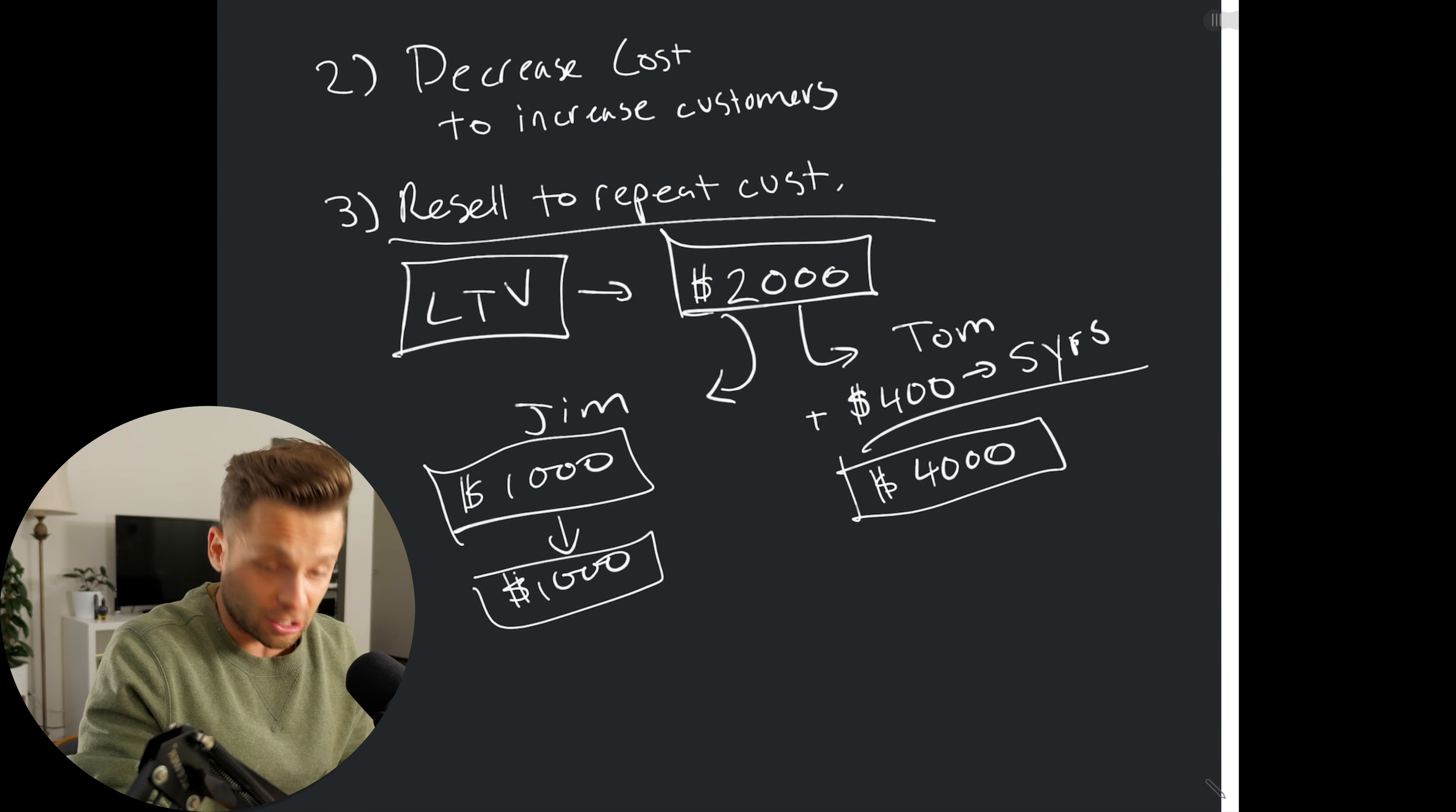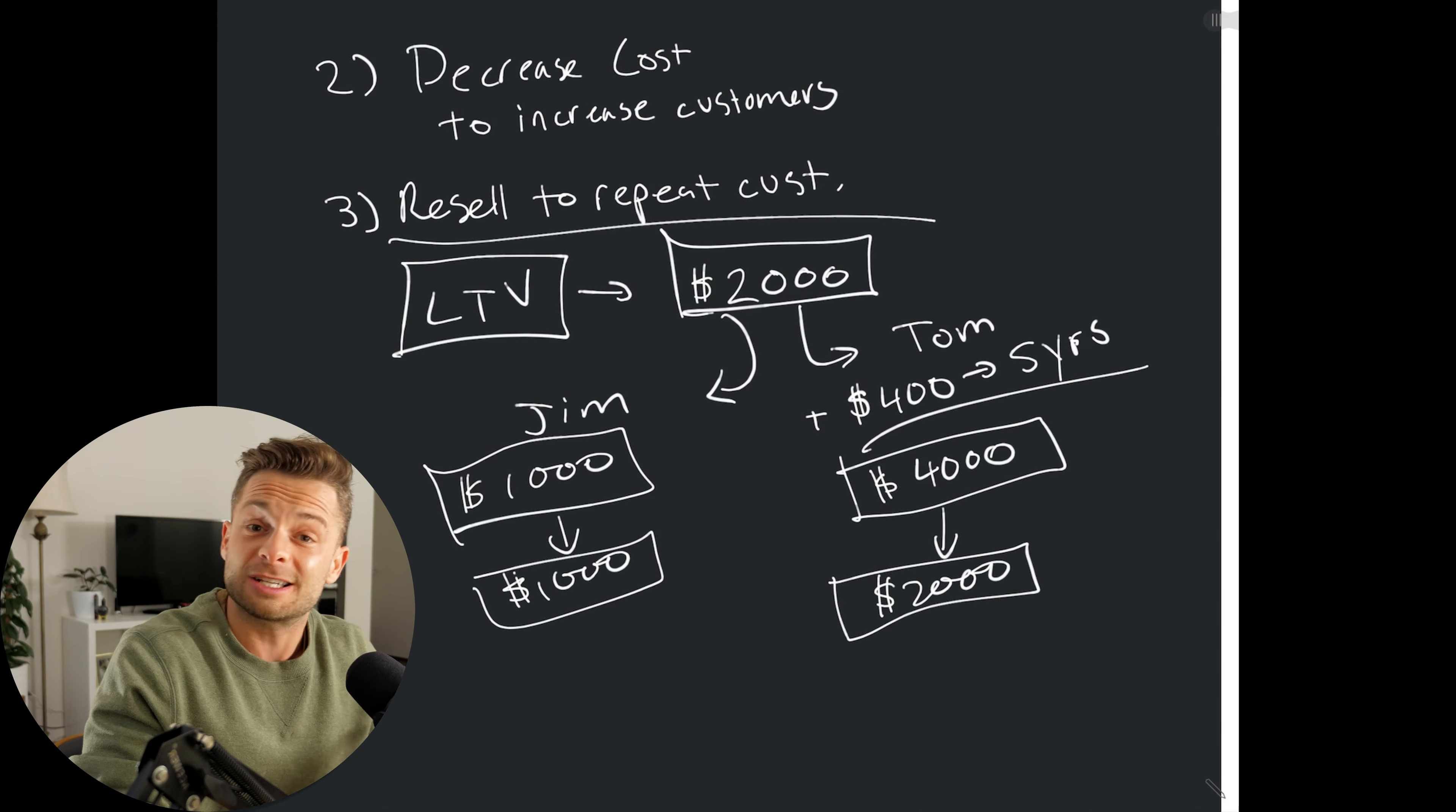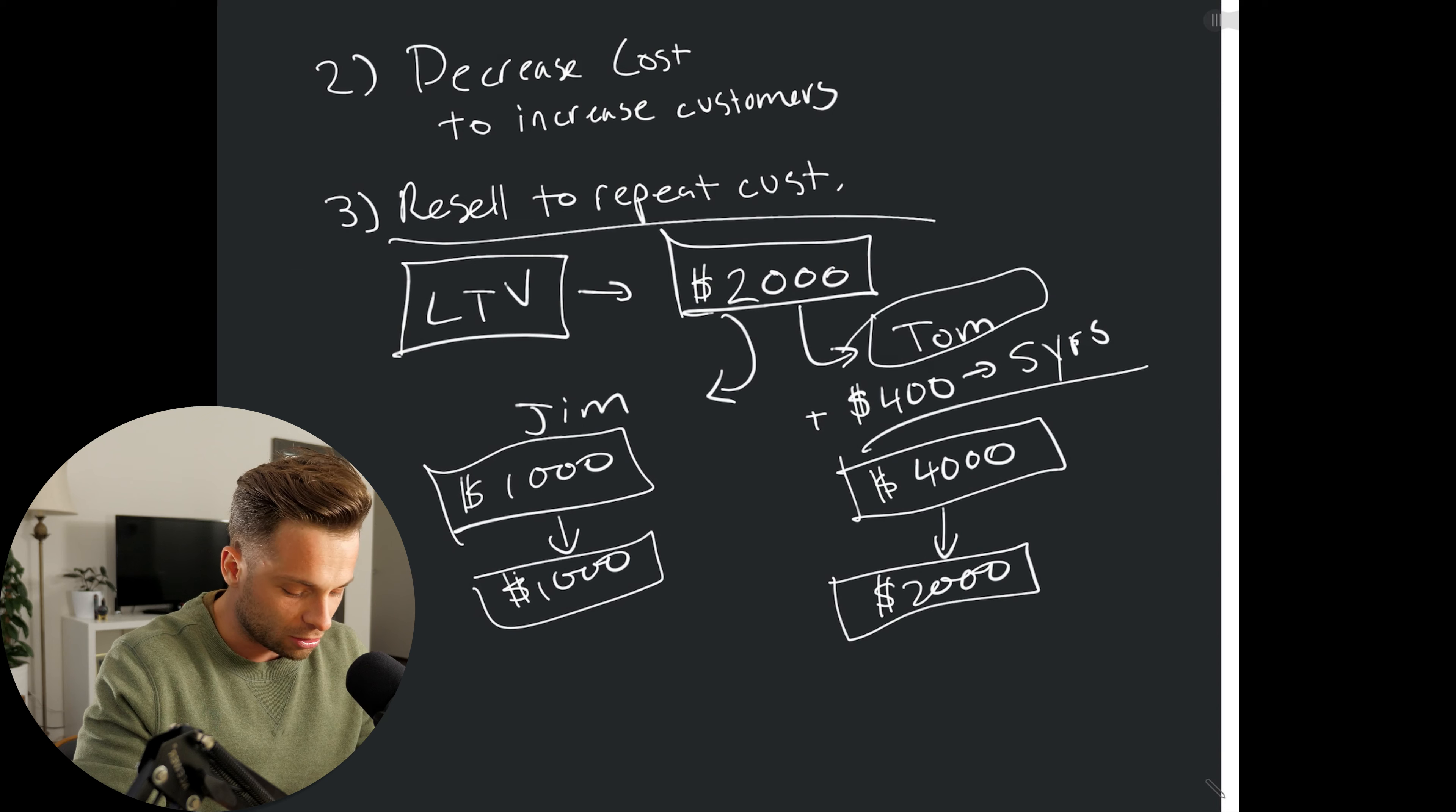Whereas, Tom, he's making $4,000 over time. So, he could even afford to spend $2,000 to acquire that same customer. Why is this important? Because if he's spending $2,000 where Jim is charging $2,000, he's actually going to be putting Jim out in business. He's going to get all the customers. Jim can't afford to keep up. And all of a sudden, Tom is making all the money.